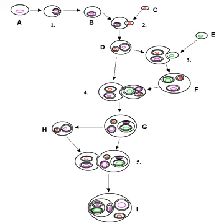Mixotricha paradoxa is a protozoan that lacks mitochondria; however, spherical bacteria live inside the cell and serve the function of the mitochondria. Mixotricha also has three other species of symbionts that live on the surface of the cell. Paramecium bursaria, a species of ciliate, has a mutualistic symbiotic relationship with a green alga called Zoochlorella, which lives inside the cell in the cytoplasm. Paulinella chromatophora is a freshwater amoeboid which has recently taken on a cyanobacterium as an endosymbiont.